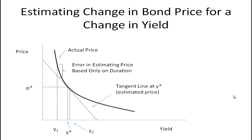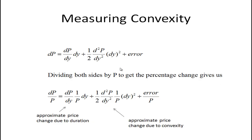If you take the bond price relationship and take a second-degree Taylor series expansion, you can work through an equation where this part of the equation measures dollar duration and this part measures dollar convexity. If we divide both sides by P, we get the approximate price change due to duration and the approximate price change due to convexity.